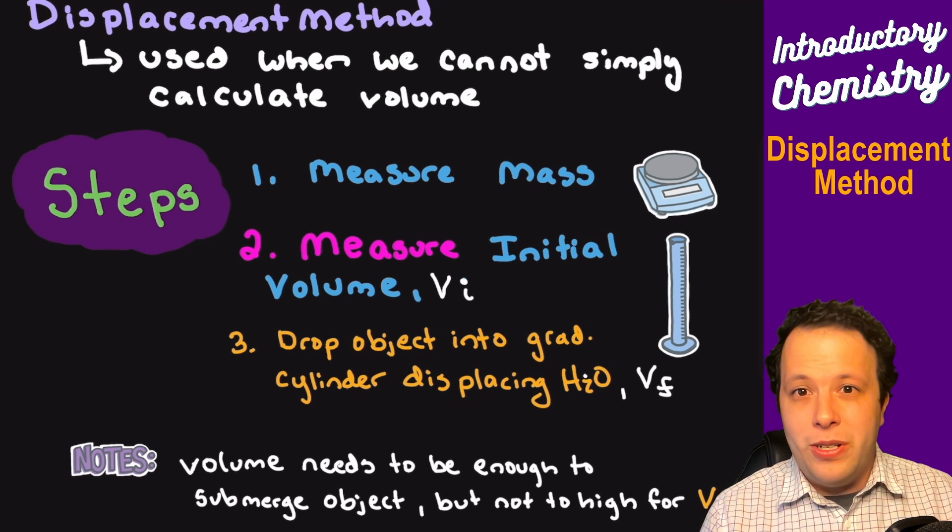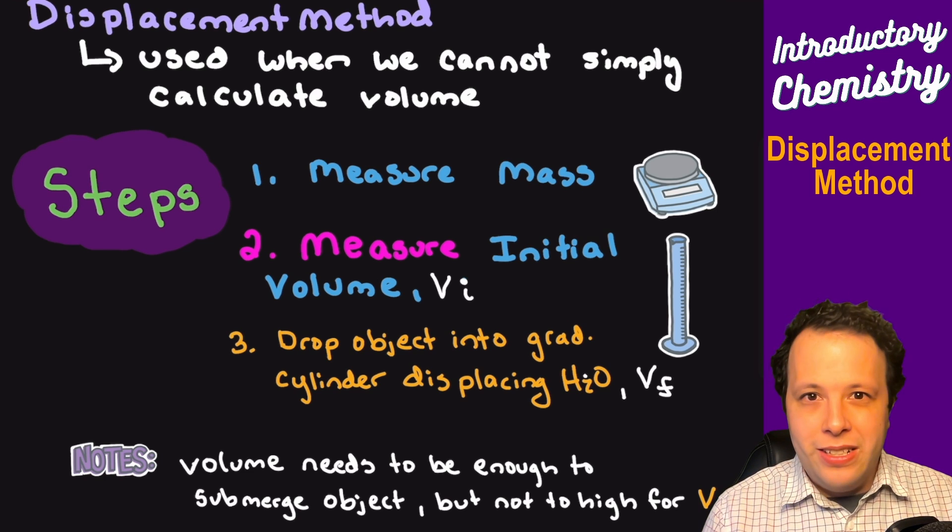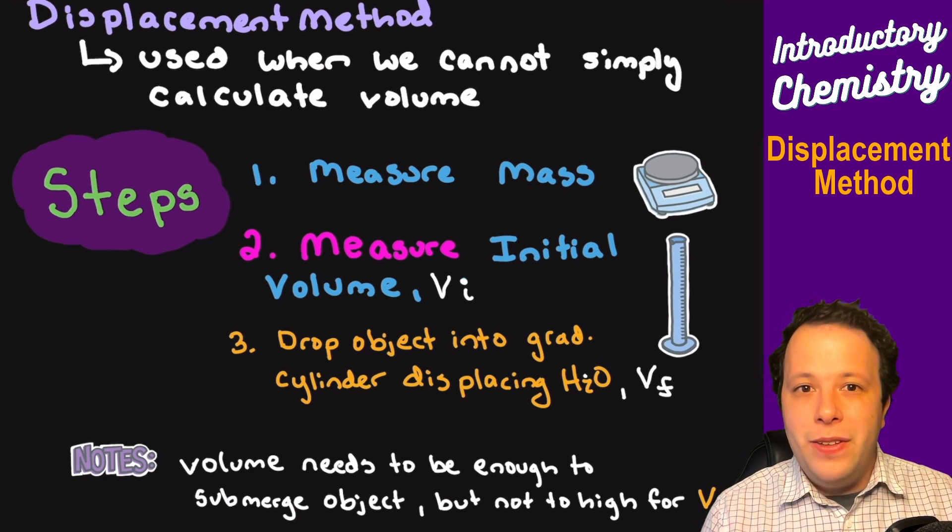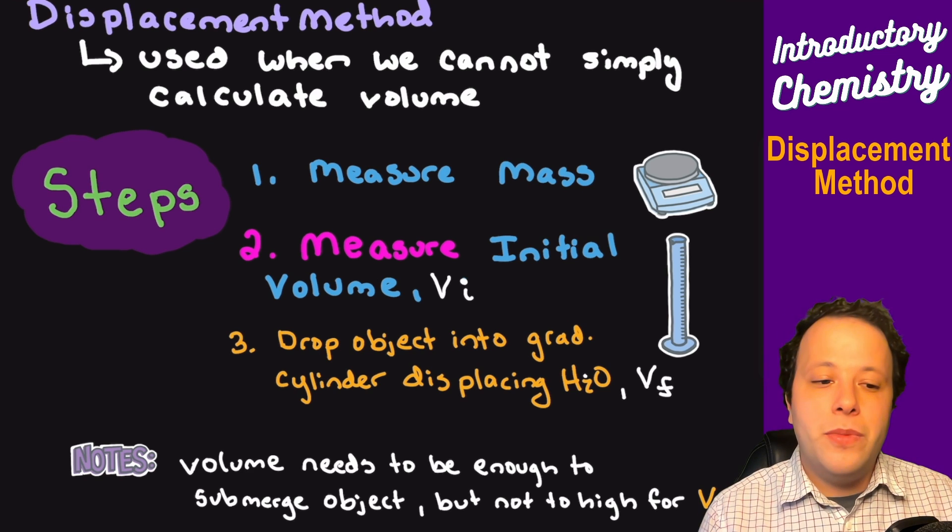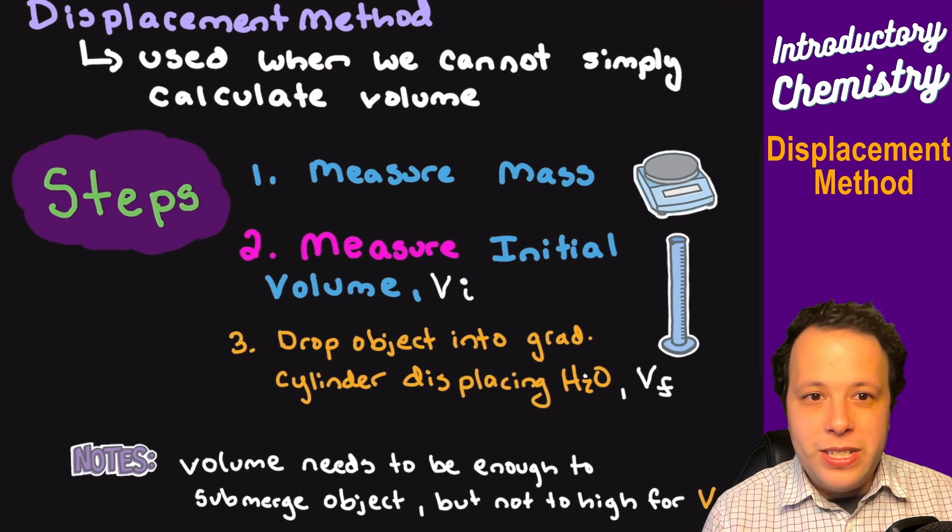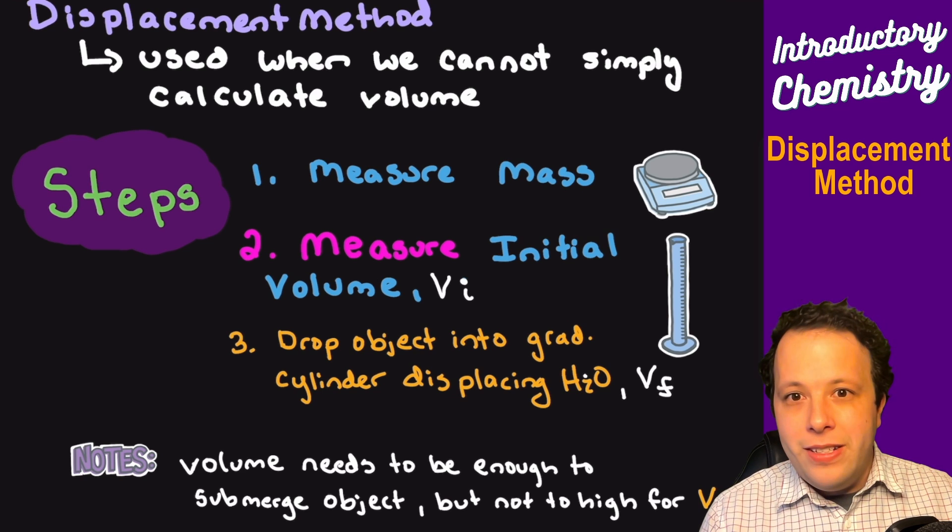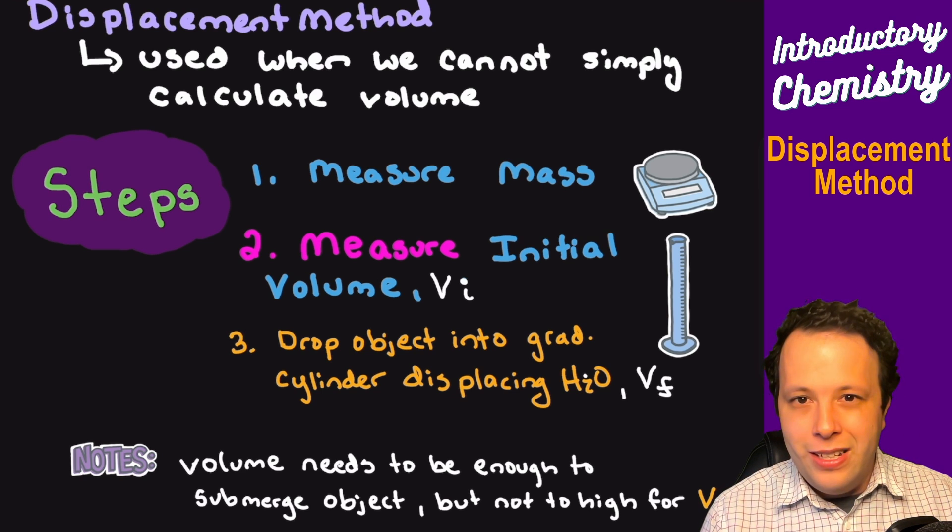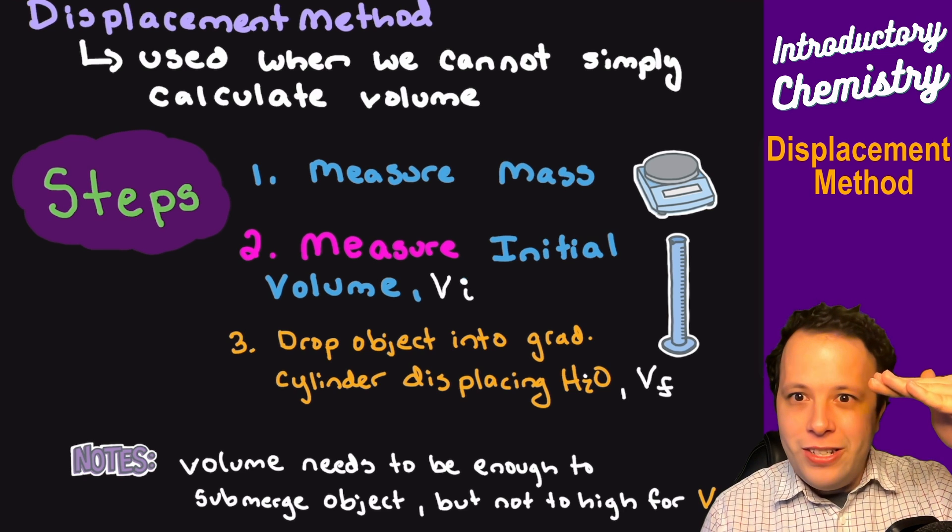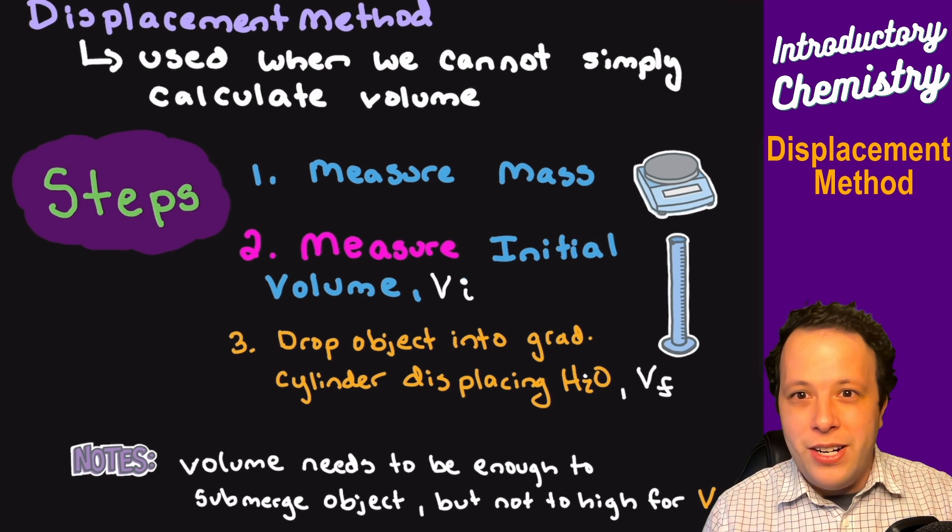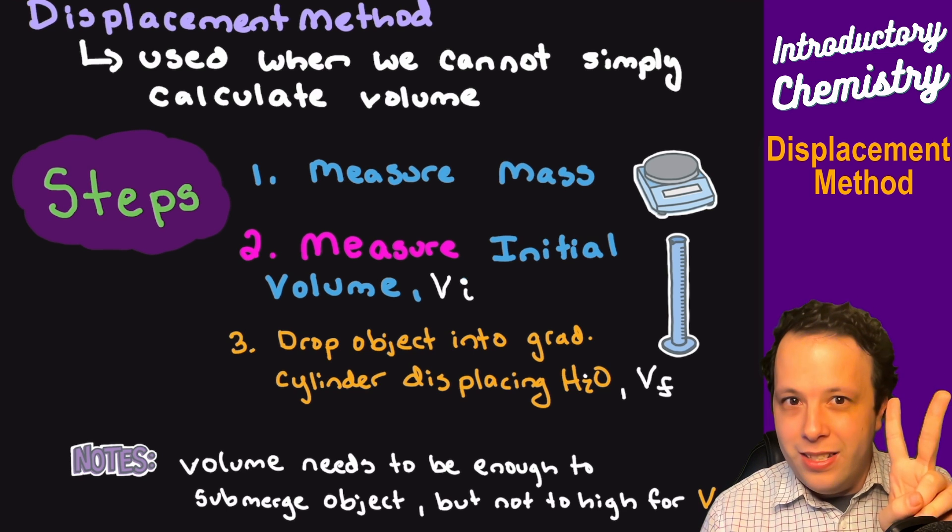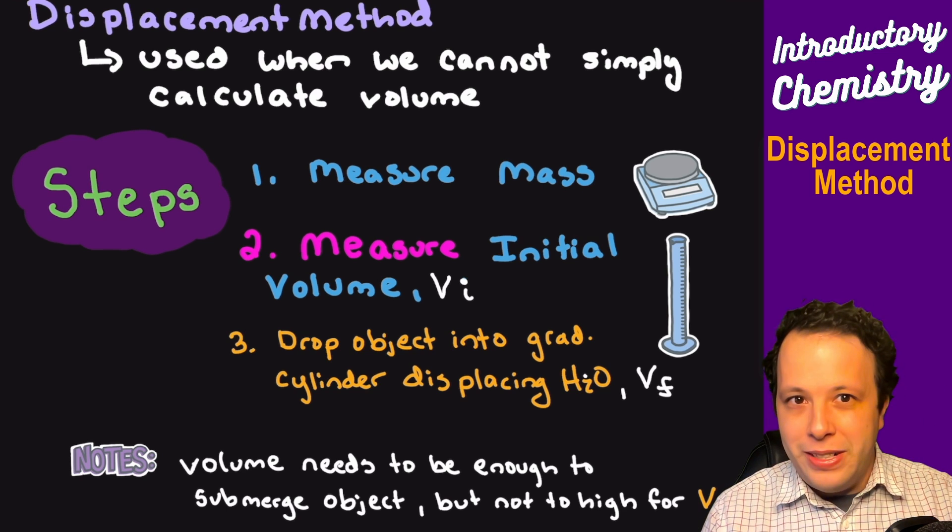What you're going to do first is measure the mass of the object, and then take a graduated cylinder and fill it with a volume. Now how much liquid should you put in the first time? The idea is that you want enough volume to submerge the object, but you don't want too much so that it overflows the graduated cylinder and you can't get a final measurement, because you're going to be measuring the volume twice. It's about the difference of volume.